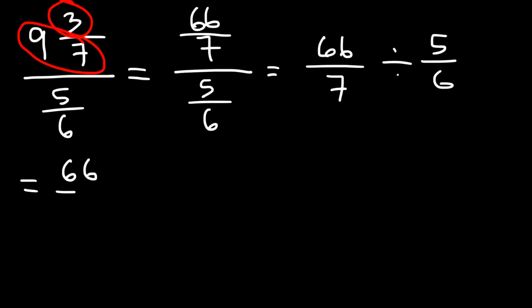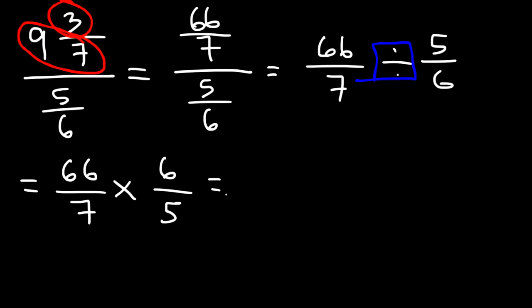That's going to be 66 over 7, and then we need to change division to multiplication and flip the second fraction — so instead of 5 over 6 it becomes 6 over 5. Then 66 times 6 is 396, and 7 times 5 is 35.